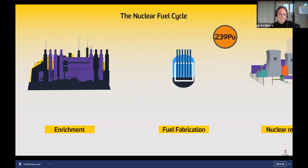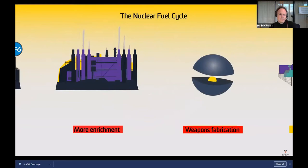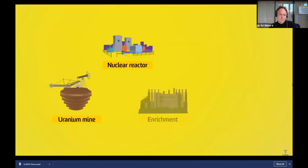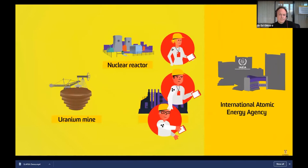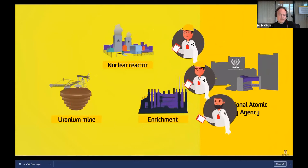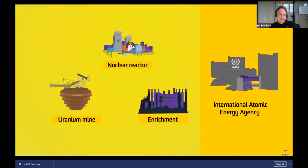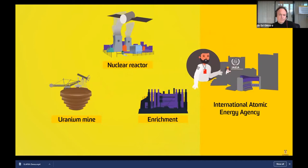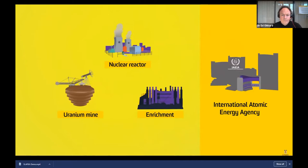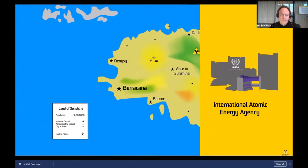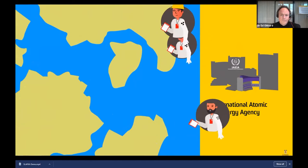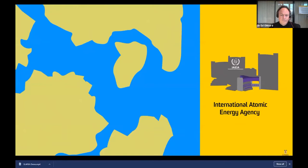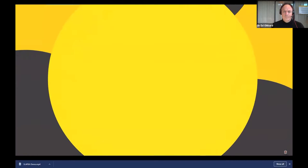The Nuclear Non-Proliferation Treaty entered into force in March 1970 and was indefinitely extended in 1995. It is one of the most successful arms agreements ever, with near universal membership. By way of enforcing the Treaty, non-nuclear weapon states agreed to accept International Atomic Energy Agency safeguards — this is what we mean by nuclear safeguards. Certain fissionable nuclear materials such as enriched uranium and plutonium can be used to fuel either reactors or weapons. The purpose of nuclear safeguards is to verify that all nuclear materials in a state are being used for peaceful purposes, through reporting of inventories and IAEA inspections.